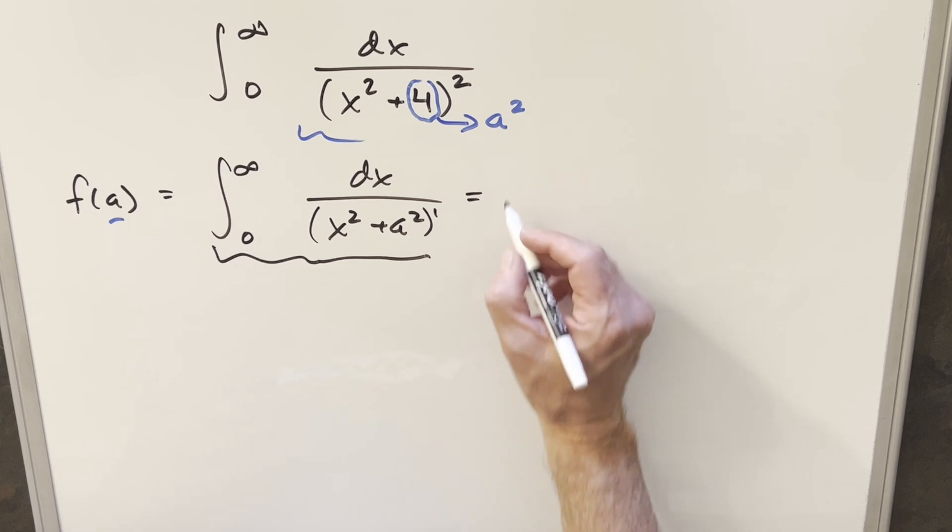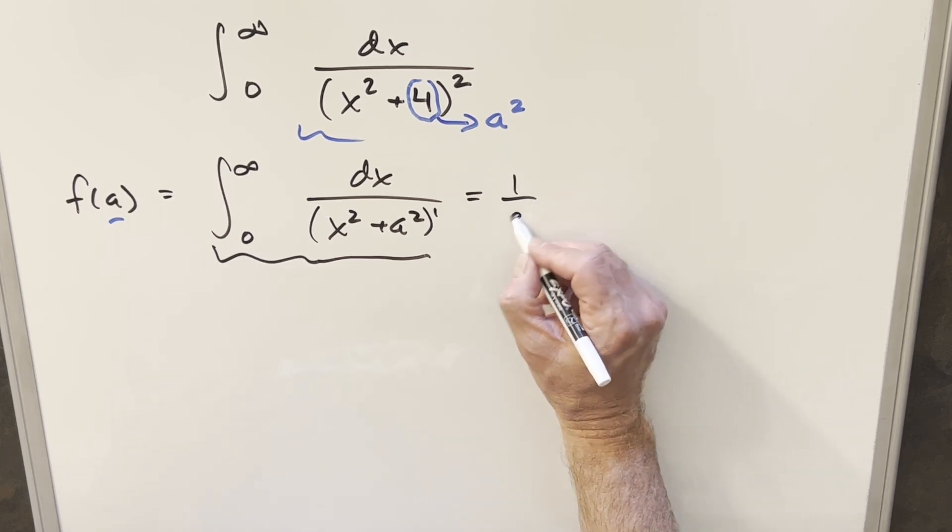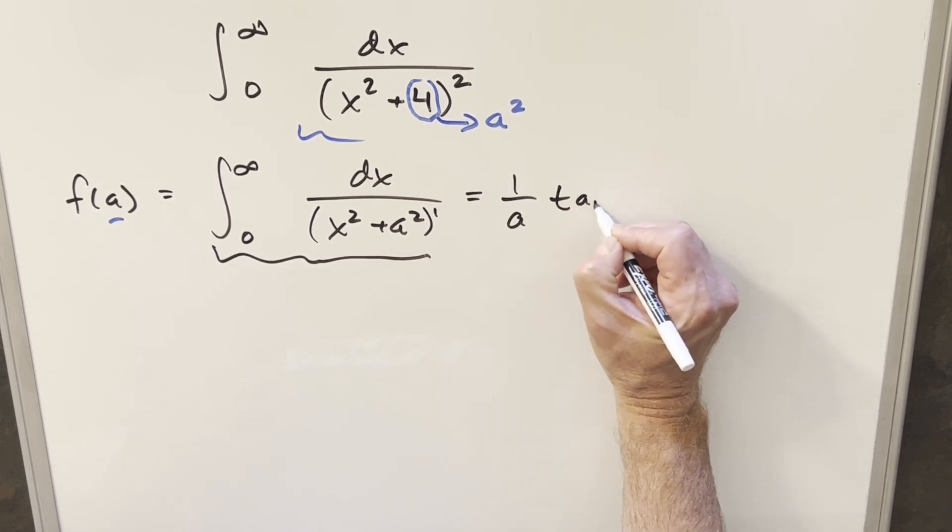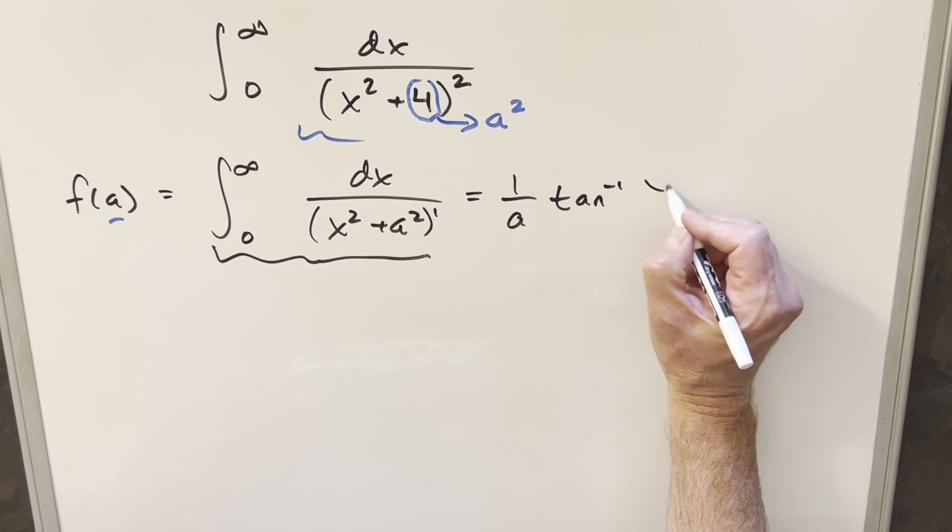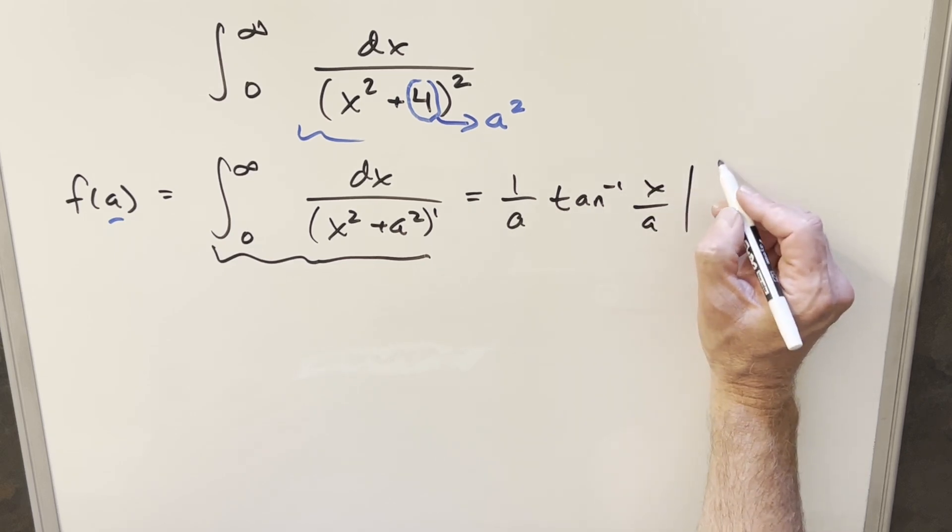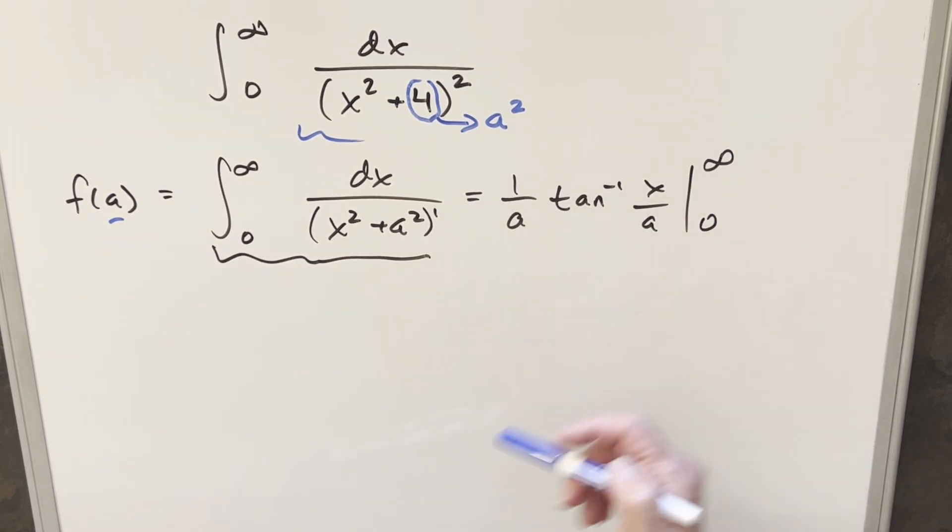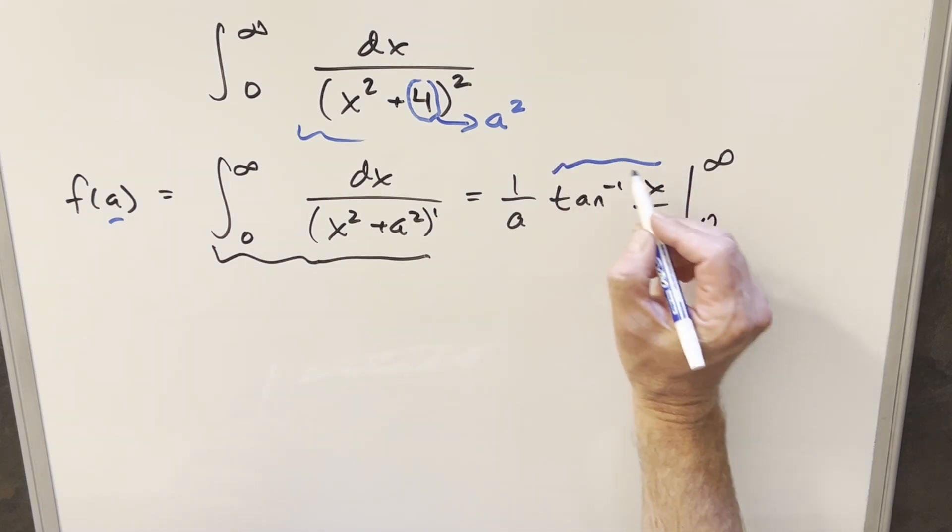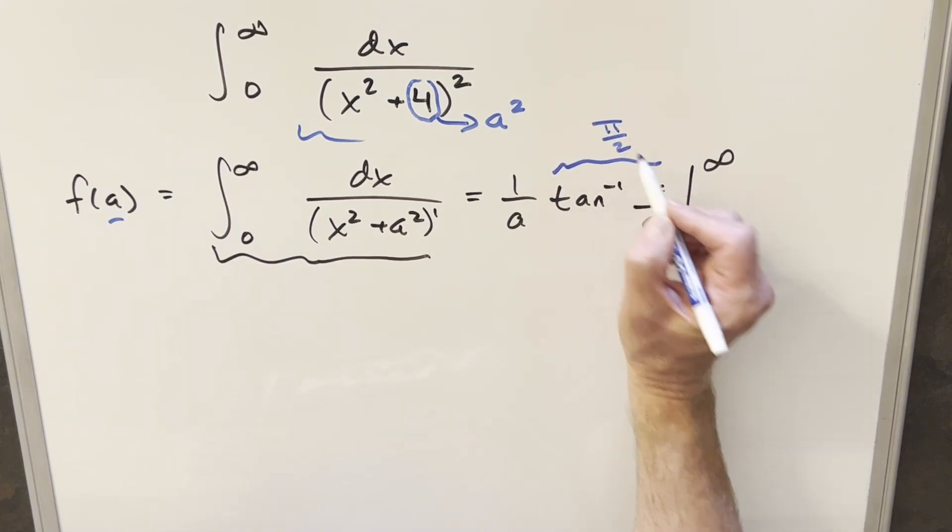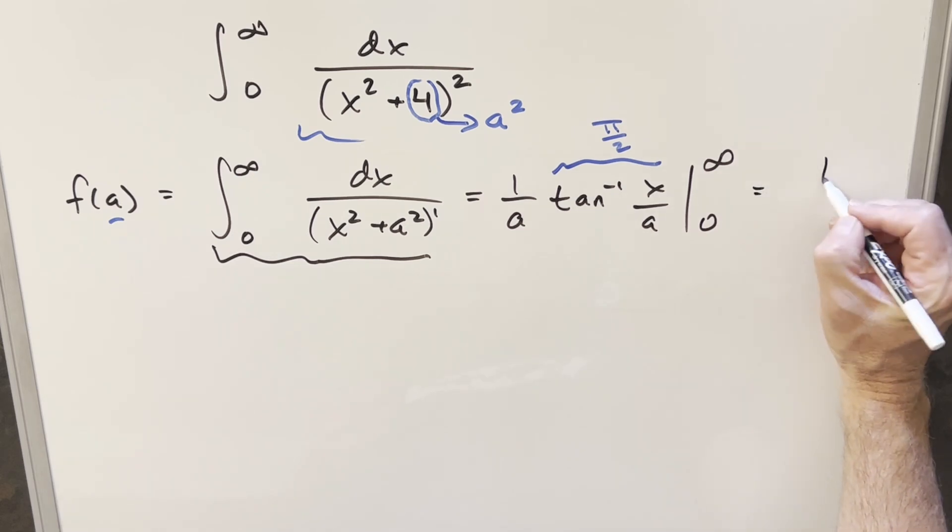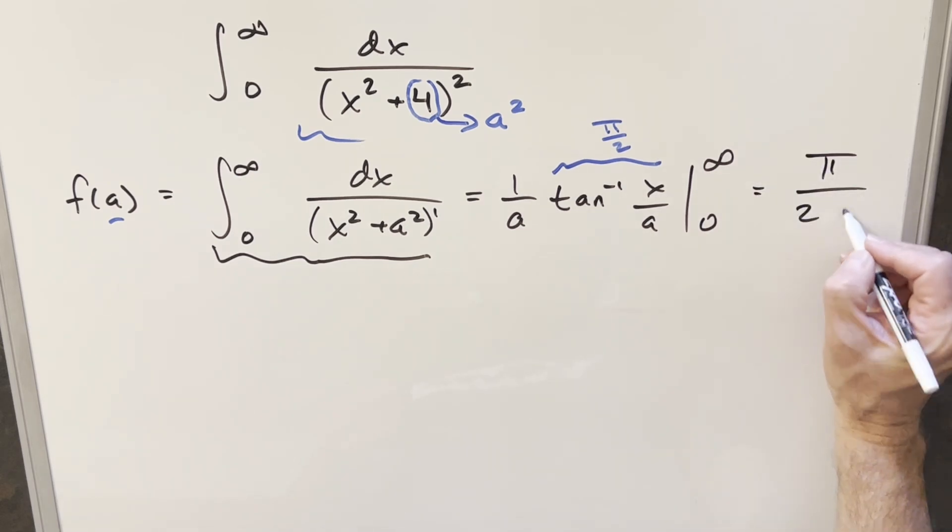So this is just going to be our arctan formula, right? So this is going to be 1 over a arctan of x over a, and we just need to evaluate this from 0 to infinity. Well, when you evaluate at 0, it's just 0, and at infinity, this part is going to be just pi over 2. So for our f of a value, what we end up getting is just going to be pi over 2a.